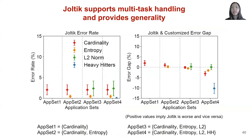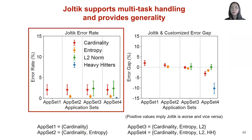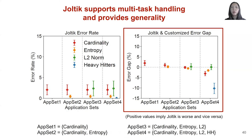To evaluate generality, we deploy both JOTIC and customized sketches to do four different sets of estimation tasks. The left figure shows that running multiple tasks on JOTIC using the same energy budget will not incur accuracy reduction in individual tasks. The right figure shows that when more tasks are needed, JOTIC will perform significantly better than customized sketches in terms of accuracy.